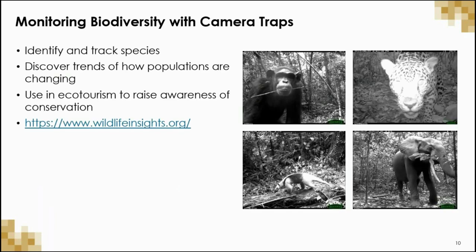In this fifth example, we're highlighting the use of remote sensing to monitor biodiversity through camera traps. Camera traps are increasingly used in conservation because they are inexpensive and result in minimal disturbance to biodiversity. Generally, the camera is equipped with an infrared sensor that is triggered when it senses an animal. Camera traps have successfully been used to identify and track species and to discover how trends in populations are changing, and to support ecotourism in terms of raising awareness of conservation. Wildlife Insights is an initiative that aims to harness the massive amount of camera trap photos and data taken throughout the world and unite them through technology and science to understand the status of biodiversity in near real time.